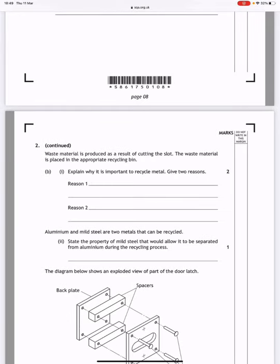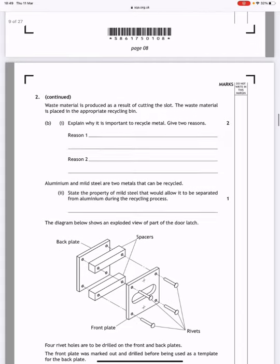Waste material is produced as a result of cutting the slot and placed in the appropriate recycling bin. Explain why it is important to recycle metal. Give two reasons. Well, metal is not a sustainable material so you want to conserve it as much as possible by recycling it. It's good for the environment if you recycle it.